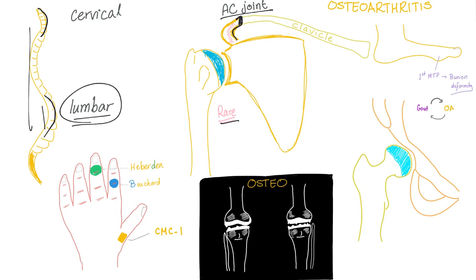Osteoarthritis can affect the first metatarsophalangeal joint — the bunion — leading to bunion deformity. Also, don't forget that gout can cause osteoarthritis, which would be secondary osteoarthritis. Interestingly, osteoarthritis can also lead to gout. This is a significant controversy among rheumatologists — is it the chicken or the egg? Is it the gout causing the osteoarthritis, or the osteoarthritis causing the gout?